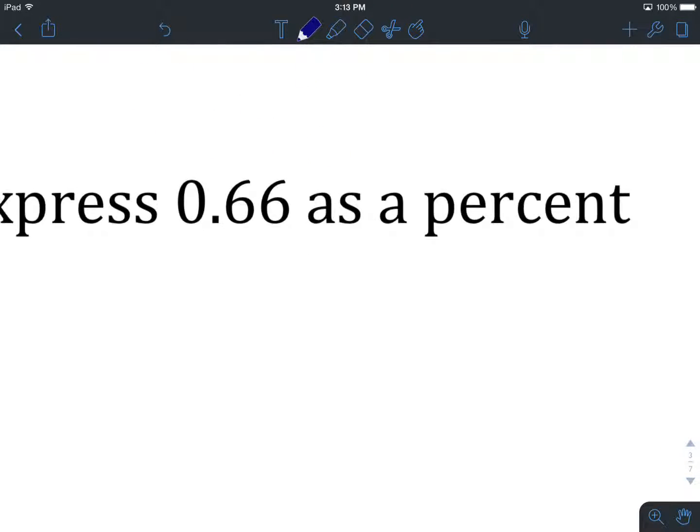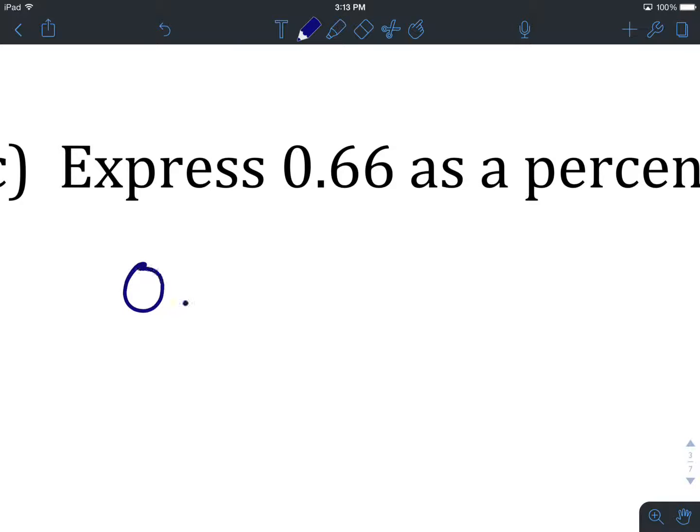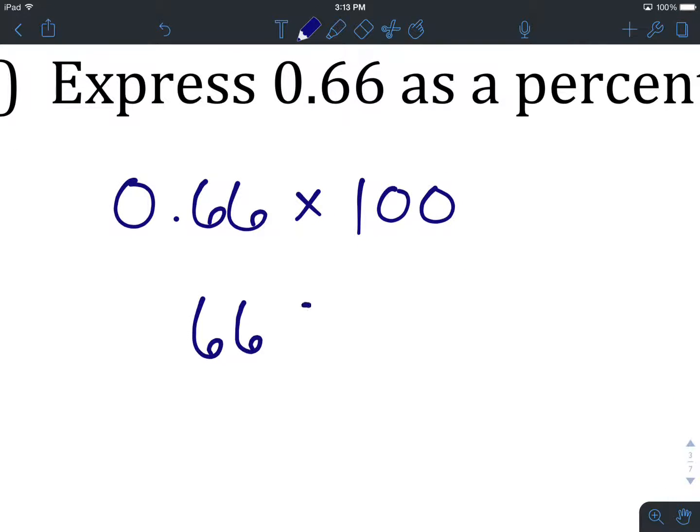Okie doke. Let's have a look at this. We take the decimal, 0.66. For this process of expressing it as a percent, we're going to multiply by 100, and that will give us 66% when we type it into our calculator.